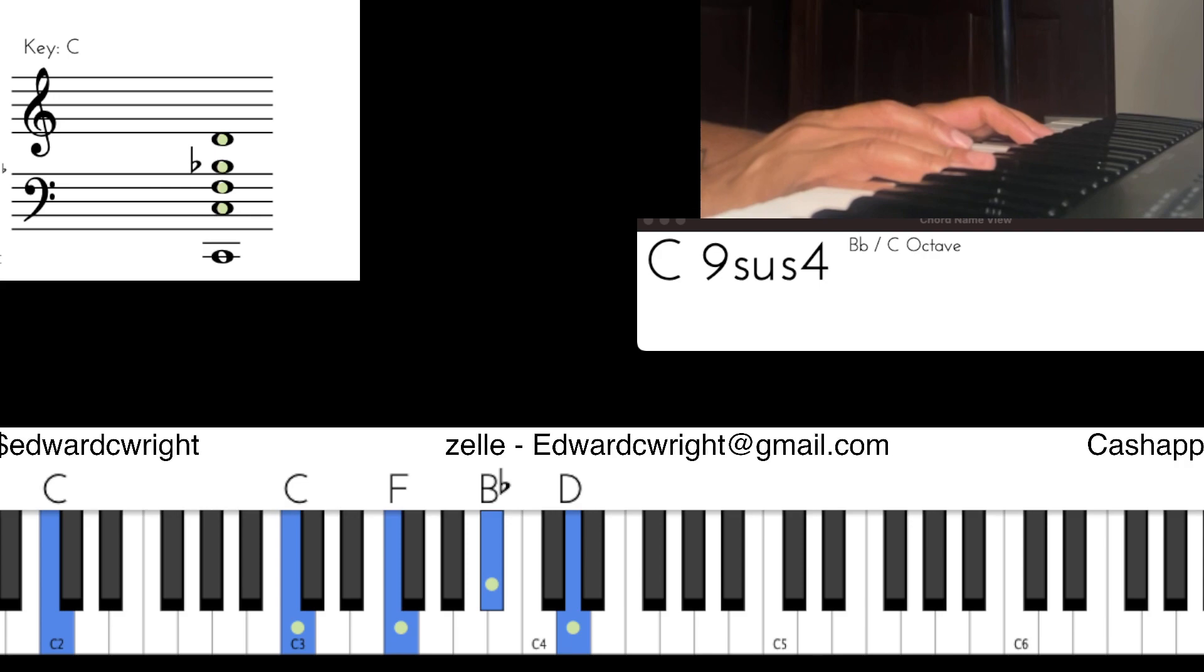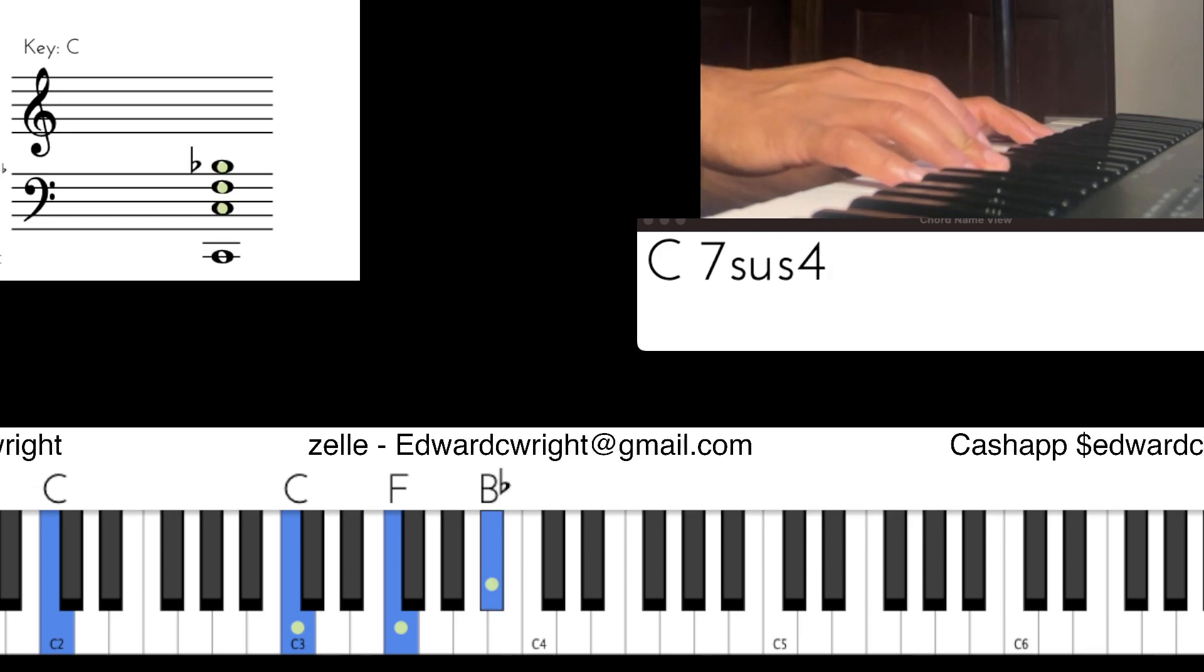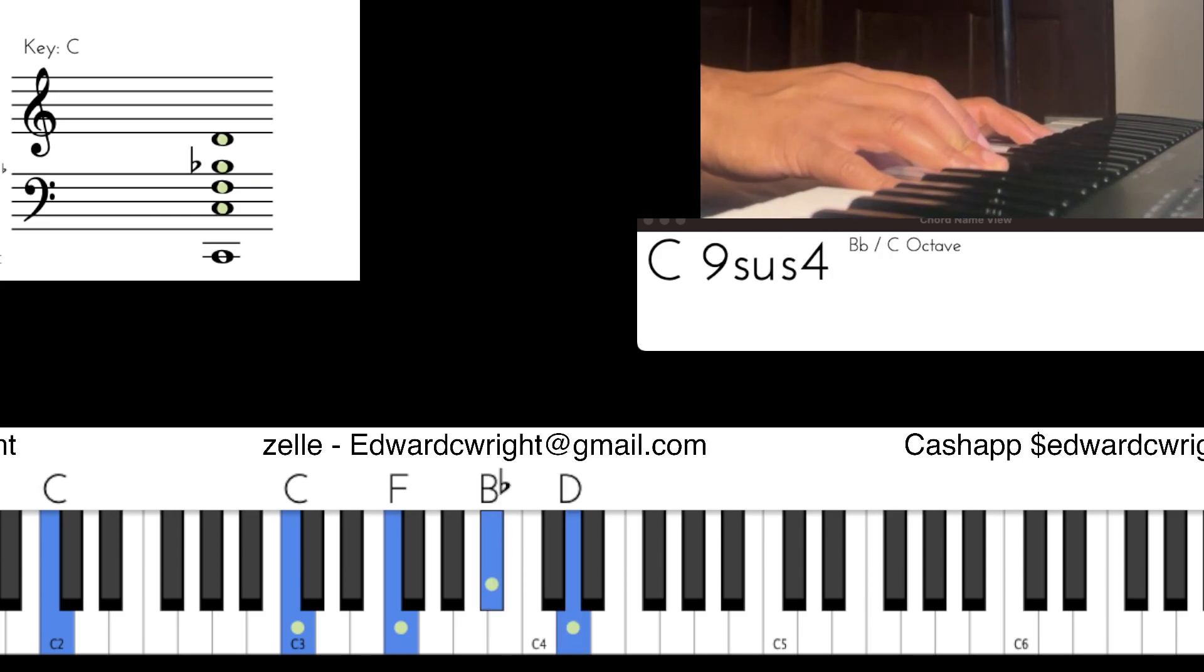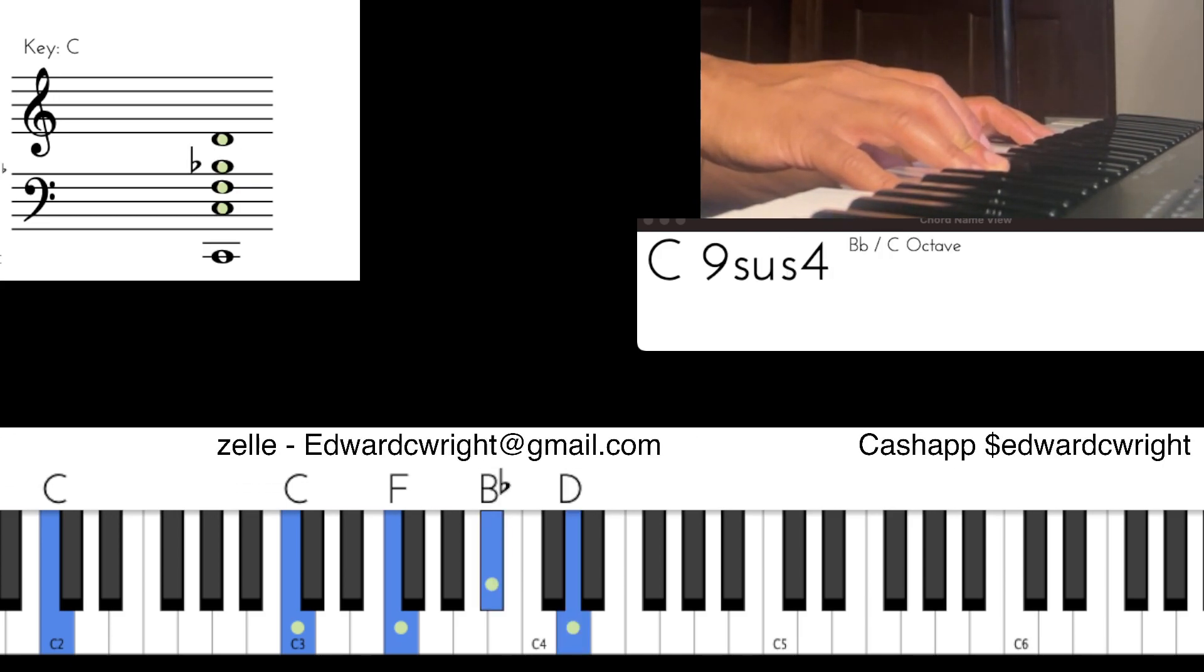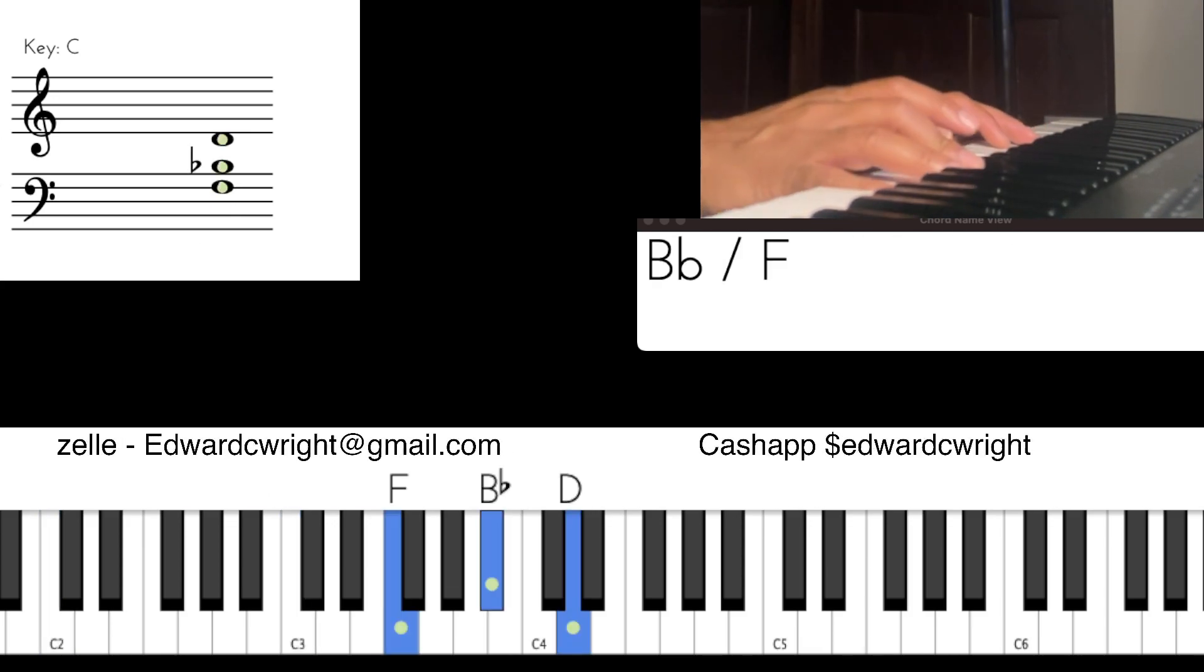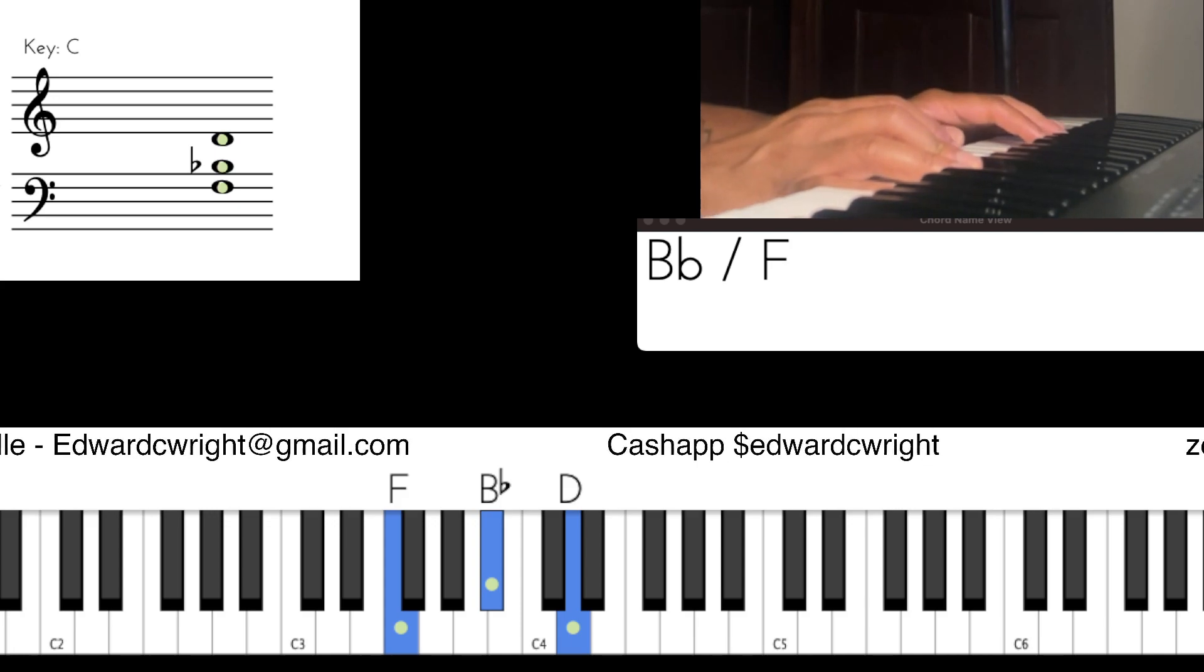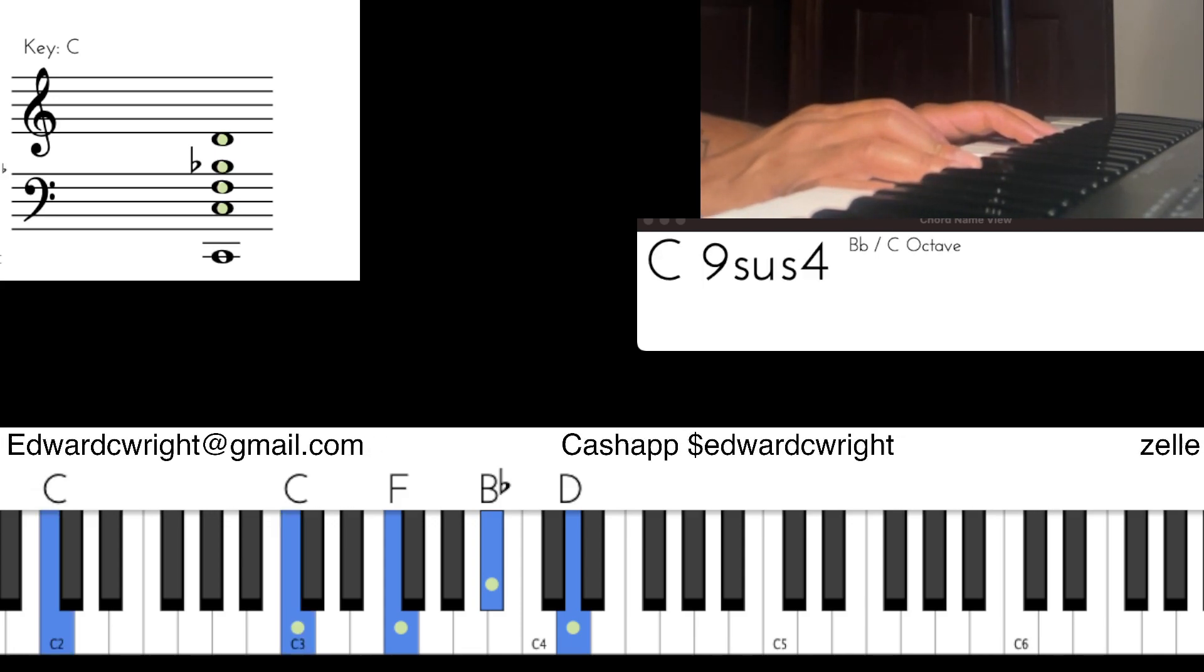Making that a sus four. All right, so we have the four, flat seventh, and the nine. See it? B flat over C. See that B flat? One, three, five of B flat over C, or C nine sus four. We have the one.